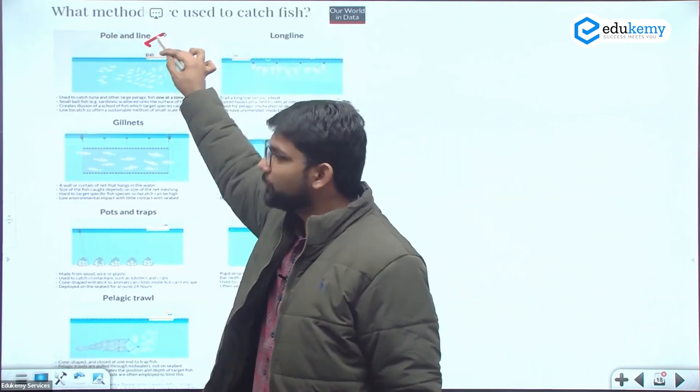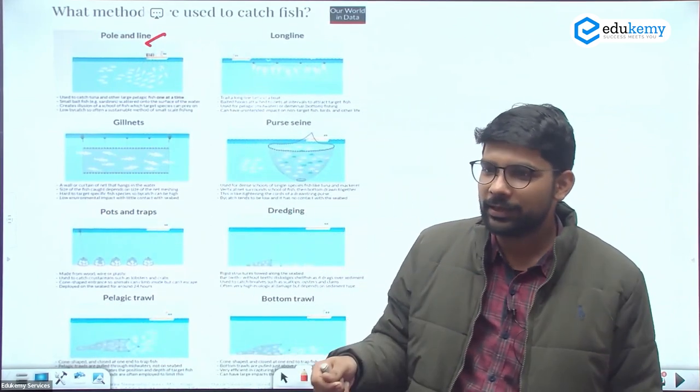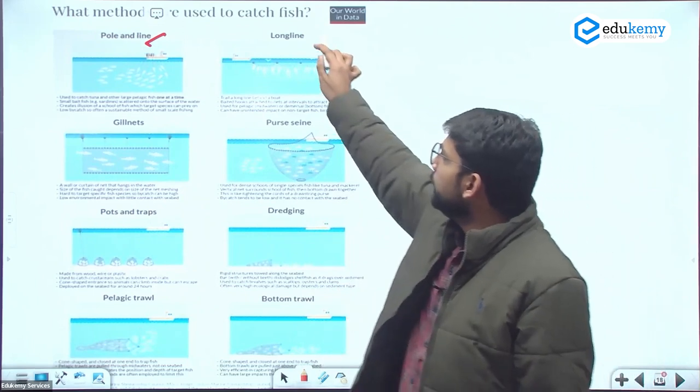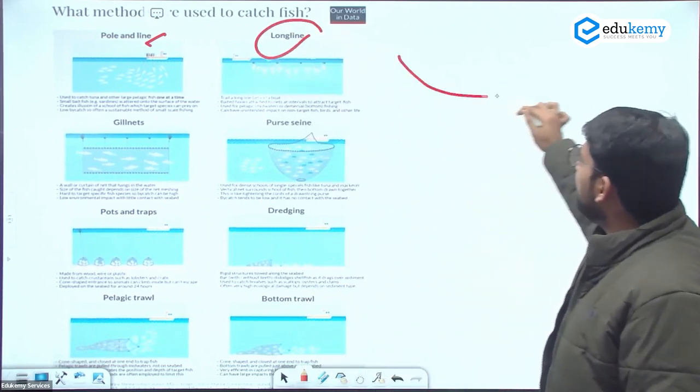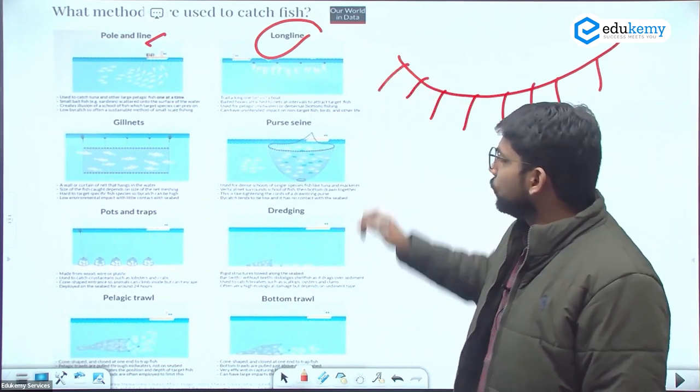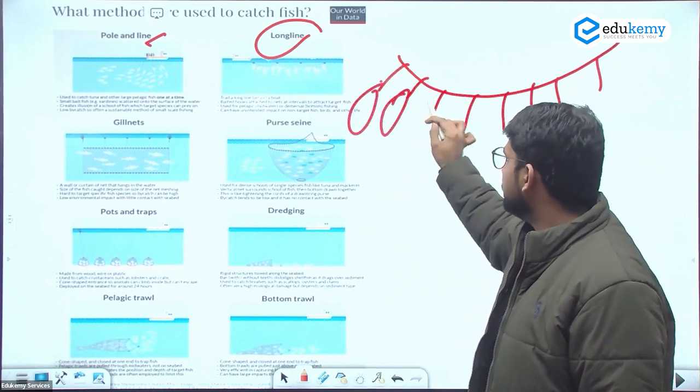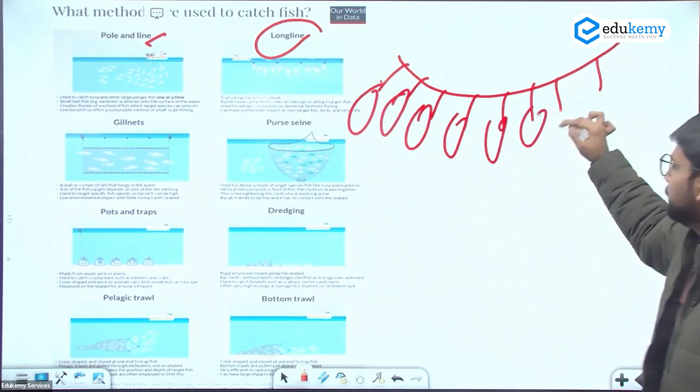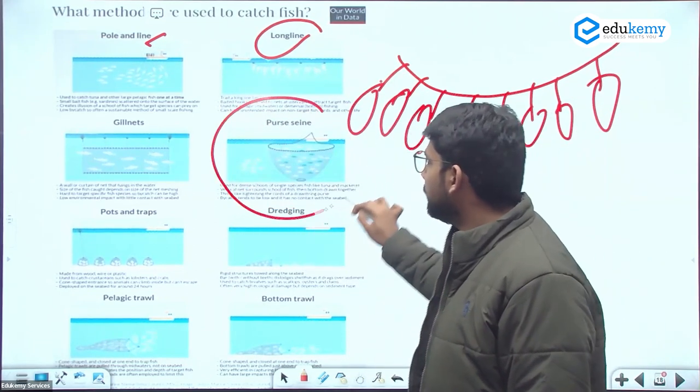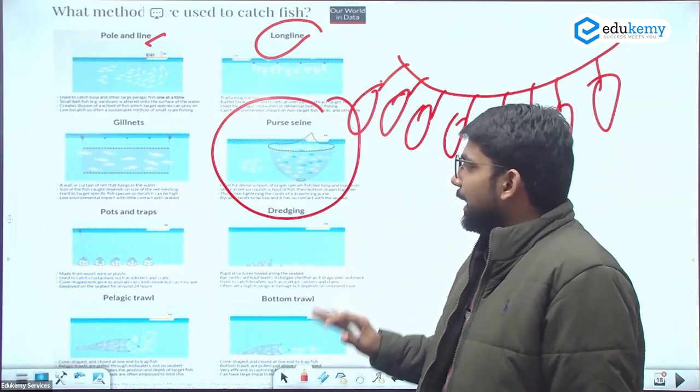Pole and line, which we've seen in movies - fishing people using a single pole and doing fishing through these methods. Long line - similarly they can make a long line so that fish can be caught at each pole. This method is known as the long line method. This is the purse seine method for capturing multiple fish at a time.